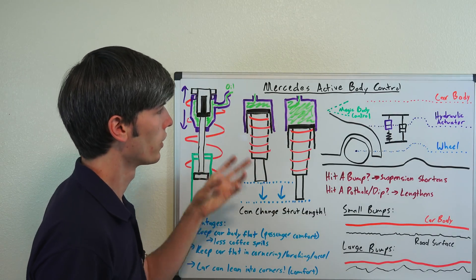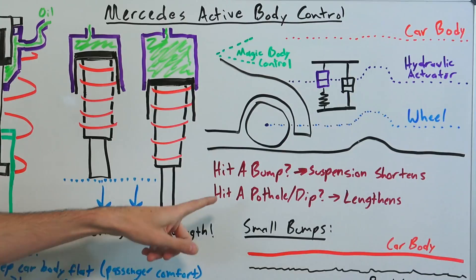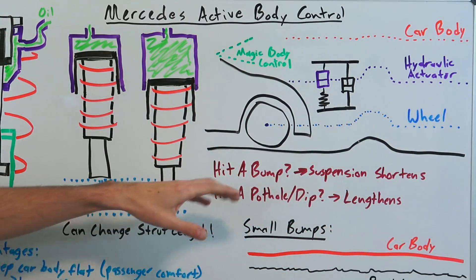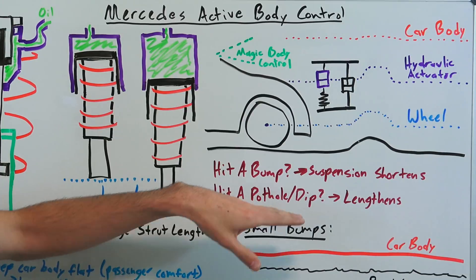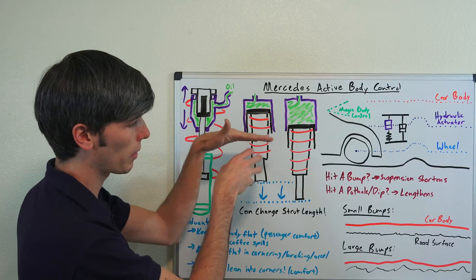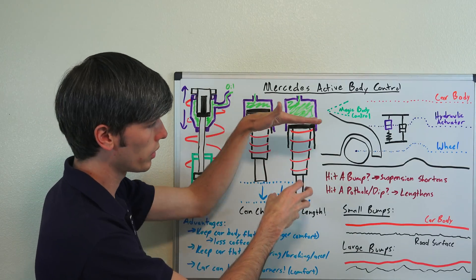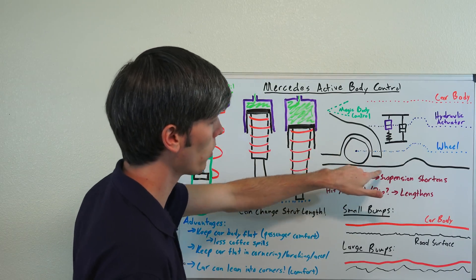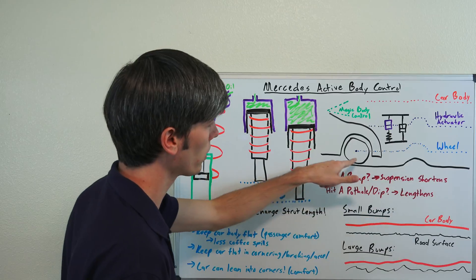You're going to leave it somewhere in the middle so you can deal with bumps. If you hit a bump, you're going to shorten the suspension to compensate for that. If you were to hit a pothole or a dip, you'll lengthen it so that the wheel goes down in it. The ride height of the car will remain the same.